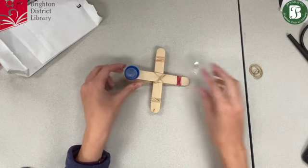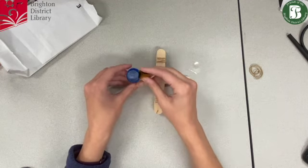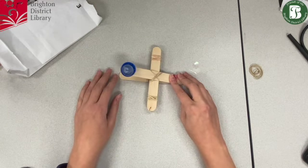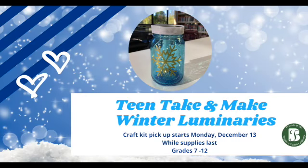And then I just test it there, make sure it doesn't seem like it's pulling off, grab the little provided pom-pom, and doink! There you go! I hope you enjoyed this craft. Next month for our Teen Take and Make, we're going to be making winter luminaries.